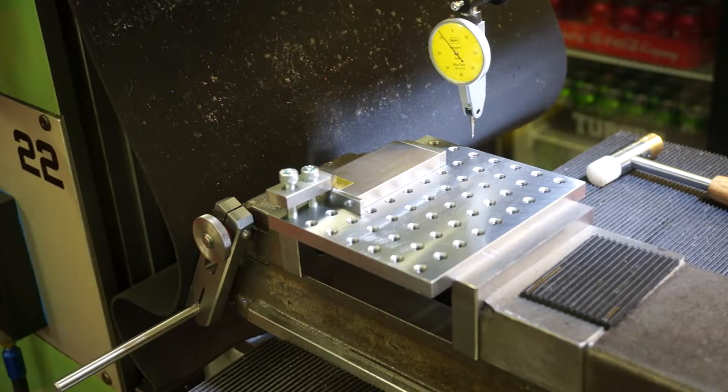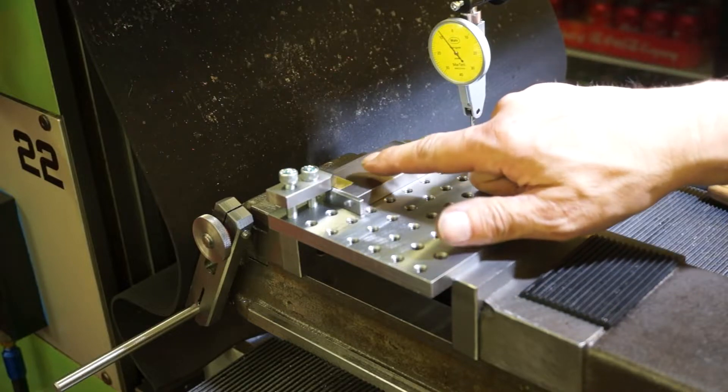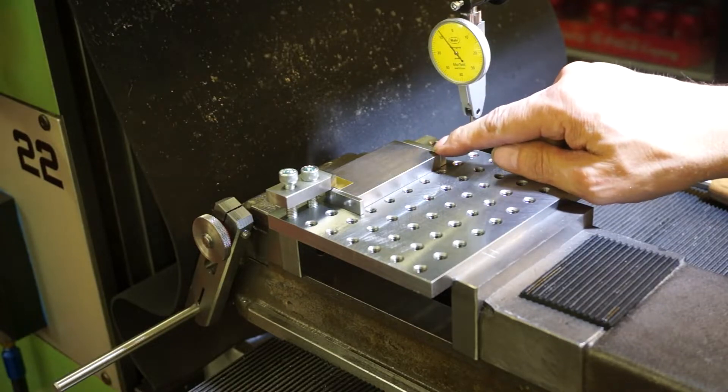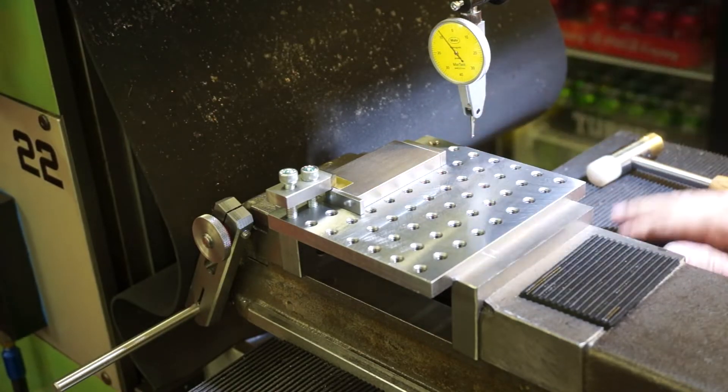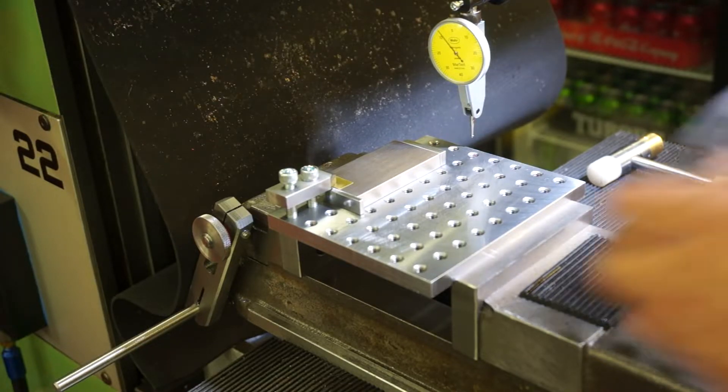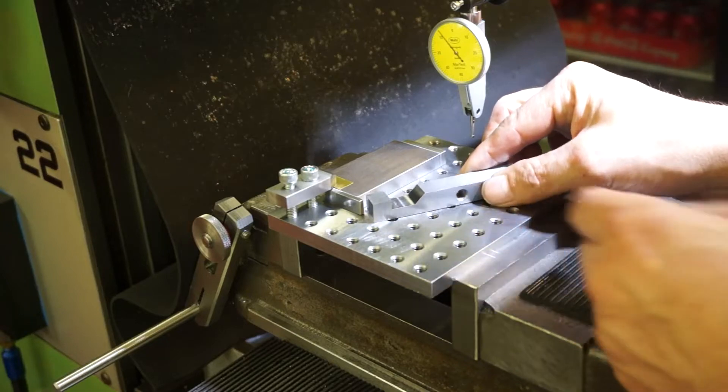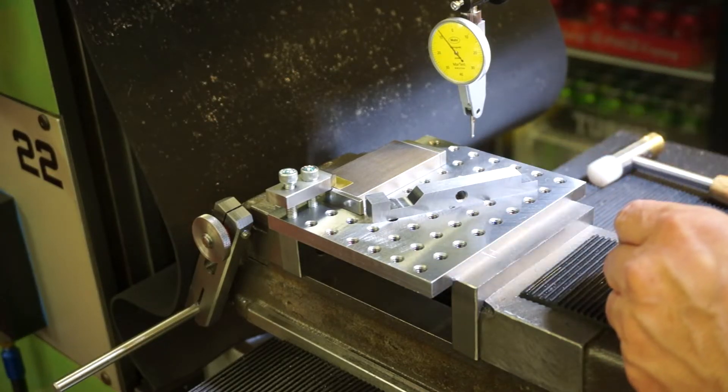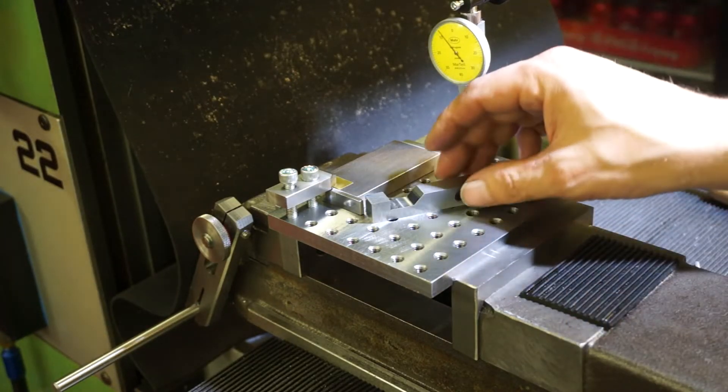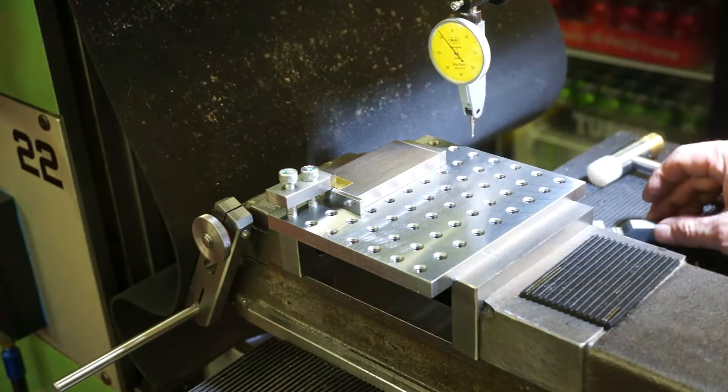So my setup here is a gauge block, 70 millimeter, and I have another run onto it, a 5 millimeter, so 75 in total. Because that's the distance I need to measure or compare to on my sine bars. These are the sine bars I'm making and the distance from this face right here to this face is 75 millimeters.